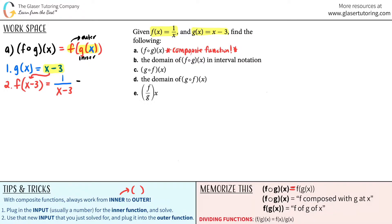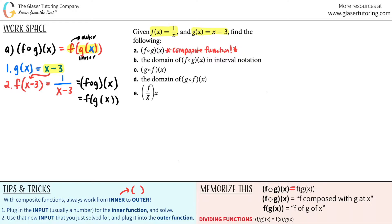You can write this as f composed with g at x, or as f of g of x — they all mean the same thing. I can't simplify further, so the answer for part a is 1 over x minus 3. When you mesh together f and g, the new composite function is just 1 over x minus 3.